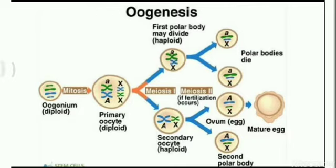The first polar body may re-divide or it may be degraded; either way, its fate is to be degraded. The valuable product is the secondary oocyte. When the secondary oocyte undergoes meiosis II — and students should mark carefully — meiosis II occurs only if fertilization takes place. Prior to the entry of sperm into the ovum or secondary oocyte, the signaling occurs, and the last phase of separation of the secondary oocyte takes place. Then the egg and the second polar body are produced.